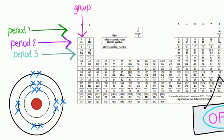Aluminium has the electron configuration 2, 8, 3. This tells us it has 3 electrons in its outer shell, as it's in group 3. Silicon is in group 4, and has the electron configuration 2, 8, 4. Phosphorus is in group 5, and has the electron configuration 2, 8, 5. Sulfur is in group 6, and has the electron configuration 2, 8, 6.